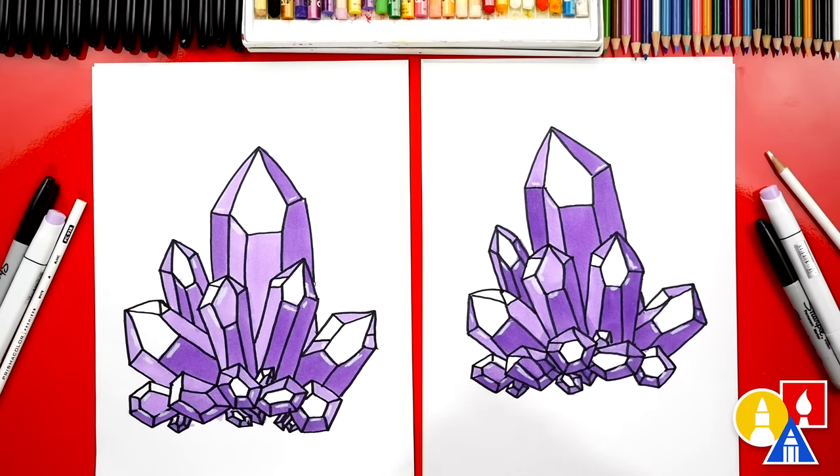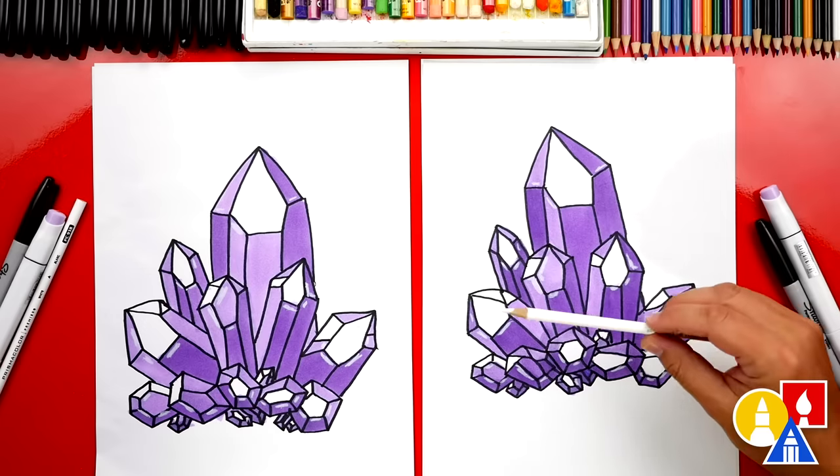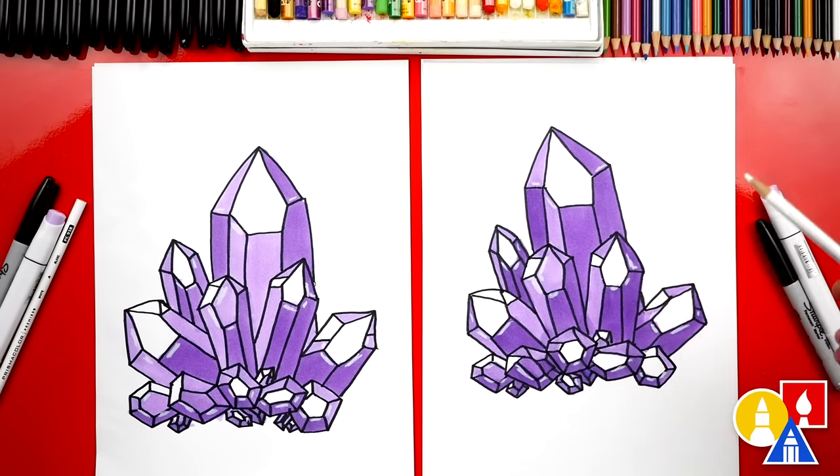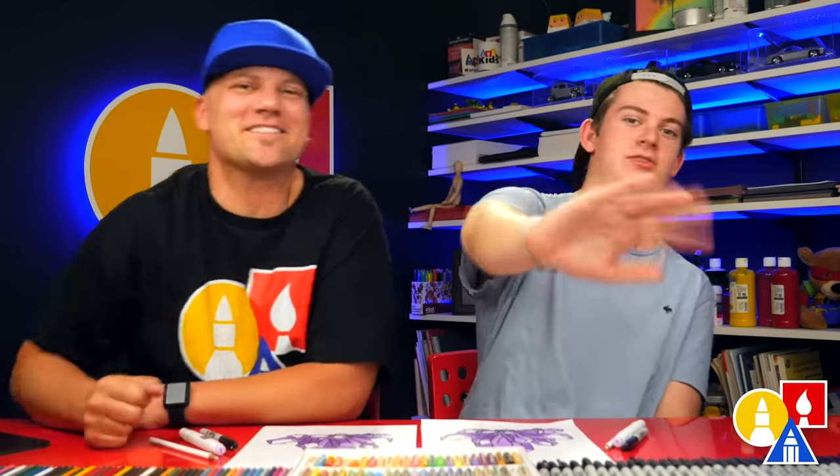Jack, we did it. We finished coloring and drawing our amethyst crystals. It looks super cool all colored in. Yeah. I hope our art friends will color their drawings too. Yeah. You can pause the video right now to take extra time to finish coloring. We also used our Prismacolor white colored pencil to add extra highlights to make them look even shinier. We hope you had a lot of fun drawing your amethyst. We do. We hope you had a lot of fun and we'll see you later art friends. Goodbye.